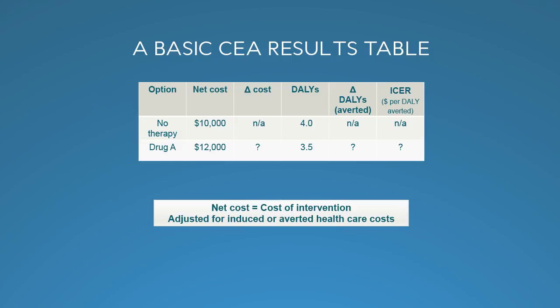Now let's talk about how to present findings from a CEA. We'll start with a standard CEA results table for just two intervention options: no therapy and Drug A. The evidence suggests that for a person with this unspecified disease, the net cost with no therapy is $10,000, perhaps representing a 20% risk of being hospitalized at a cost of $50,000 when it happens. There are four DALYs associated with this disease, meaning the person will suffer a total of four DALYs, representing both premature mortality and morbidity, compared with a person without the disease.